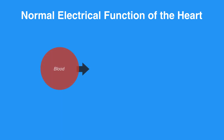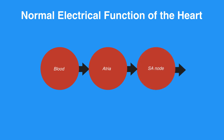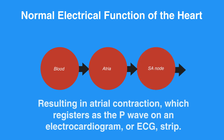When blood enters the atria of the heart, an electrical impulse sent from the SA node conducts through the atria, resulting in atrial contraction, which registers as the P wave on an electrocardiogram or ECG strip.